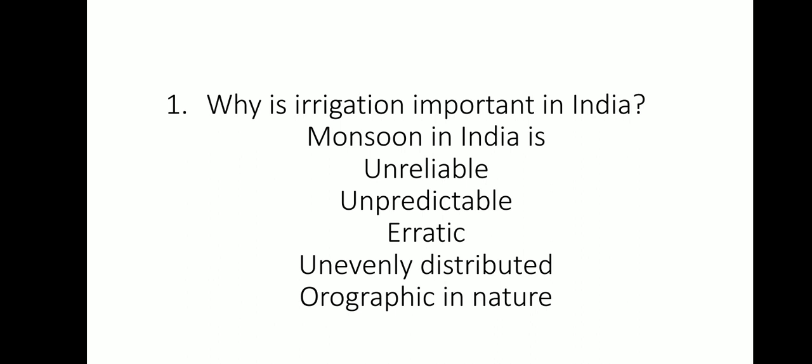Why is irrigation important in India? Because monsoon rainfall in India is unreliable, unpredictable, and erratic. Sometimes rainfall is so heavy it causes floods, and other times it is so less that dry conditions occur. It is unevenly distributed — Rajasthan's western Thar Desert receives less than 25 centimeters of rainfall, while Meghalaya's Cherrapunji or Mawsynram receives the highest rainfall of approximately 1100 to 2000 centimeters. Rainfall is also orographic in nature, meaning a physical barrier like a mountain stops the monsoon-bearing wind and causes rainfall.